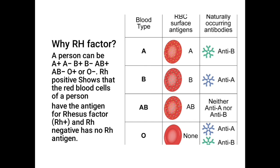For blood group B, the antigen is B. Since the antigen is B, the blood group is B, and the antibody present in the serum is anti-A. For blood group AB, the antigens are both A and B on the surface of the red blood cells, and there is no antibody present in the serum.